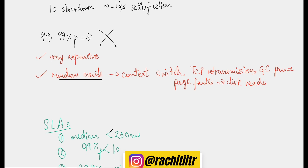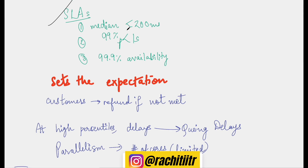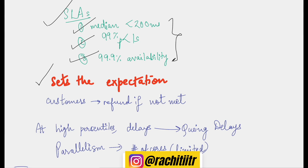The next thing to touch upon is Service Level Agreements, or SLAs. In an SLA you will typically see things like: the median response time is 200 milliseconds, the 99th percentile is 1 second, and the availability will be three nines. This sets expectations — as a user you can browse different APIs, look at their SLAs, and decide which service to pick based on pricing and SLAs. Customers can also get a refund if the SLAs are not met due to some failure.